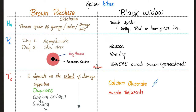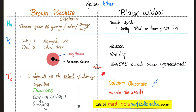Where else have you heard of dapsone before? It's the treatment of the brown recluse spider bite. You might think it's just a spider in the attic, no big deal — but before you know it, doctors are giving you dapsone, the same medication used to treat leprosy. By the way, this slide is taken from my emergency medicine high yields course, available to download at my website, medicosisperfectionalis.com.